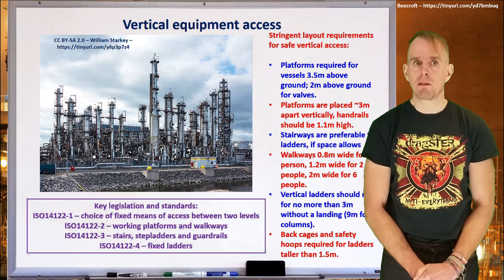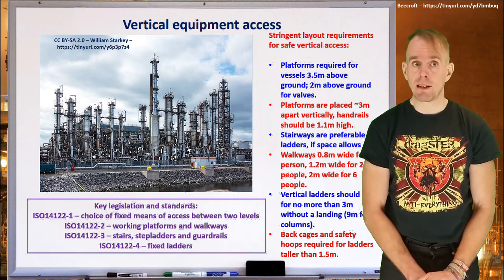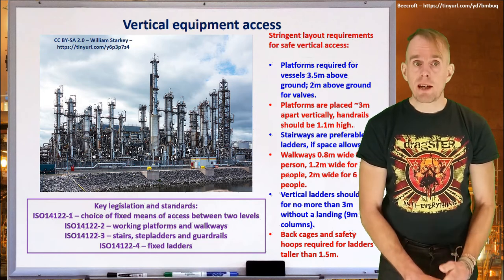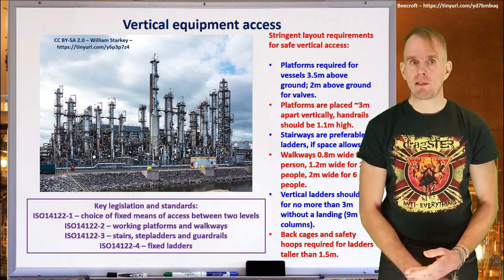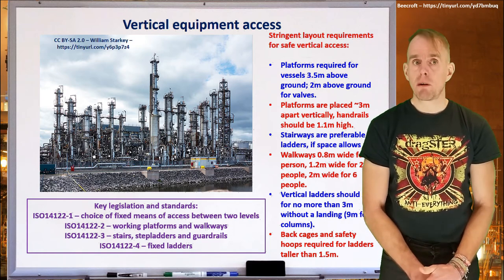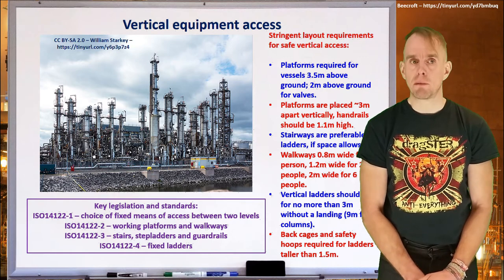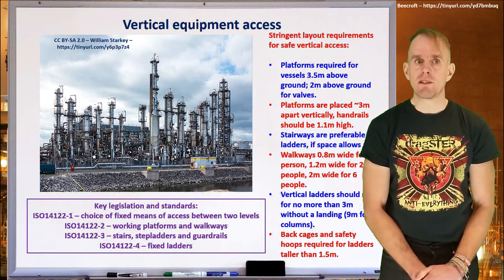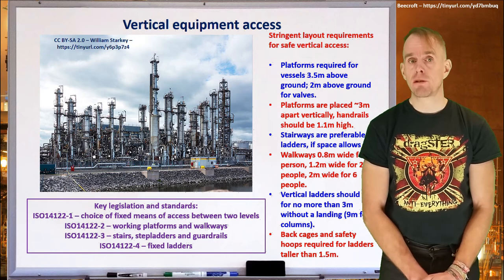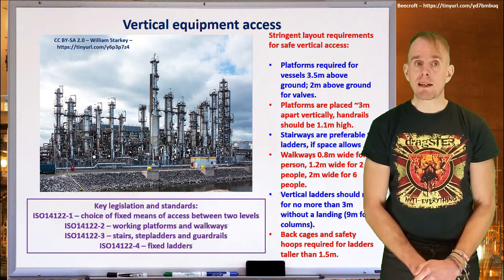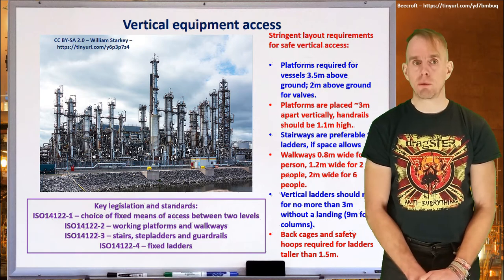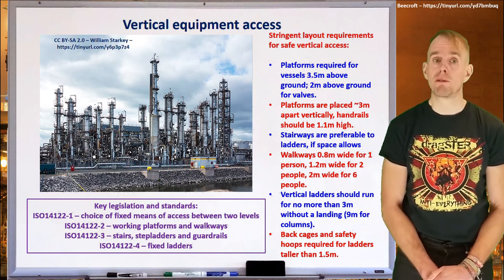Platforms are required for vessels three and a half metres above the ground, or two metres above the ground for access to valves. Platforms are placed about three metres apart vertically and handrails should be 1.1 metres high. Stairways are always preferable to ladders if space allows because they are inherently safer. Walkways should be 0.8 metres wide for one person, 1.2 metres wide for two people, and two metres wide for up to six people. Vertical ladders shouldn't run for more than three metres without a landing, or longer than nine metres without a landing for tall items such as columns. Ladders also need back cages and safety hoops for ladders taller than 1.5 metres.